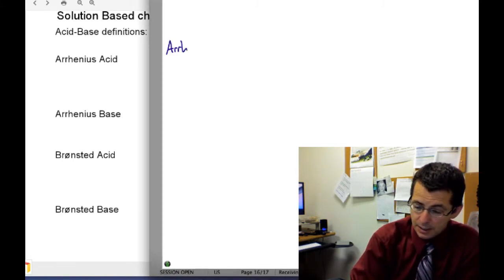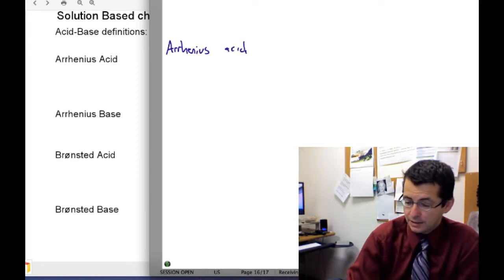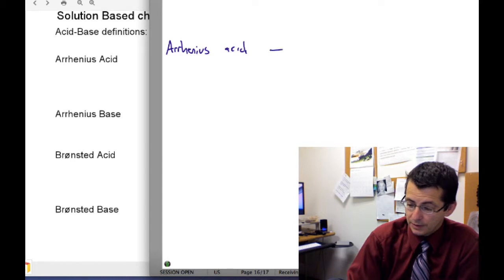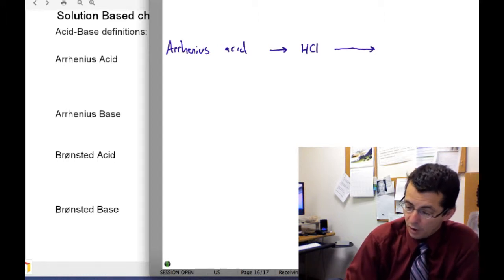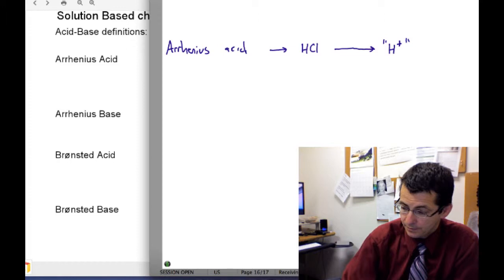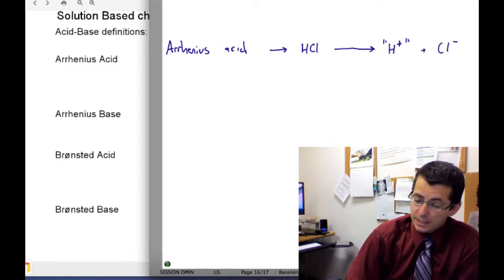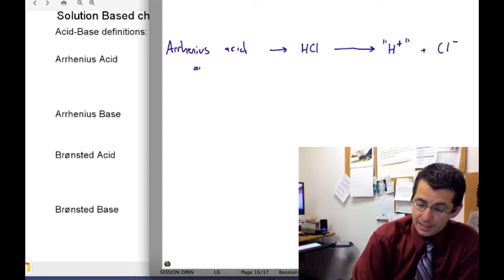Our more traditional Arrhenius acids are those materials we typically think of as acids, usually something like HCl. When you dissolve them in water, they release H+ and Cl-. An Arrhenius acid can be defined as anything that releases H+ in aqueous solution.